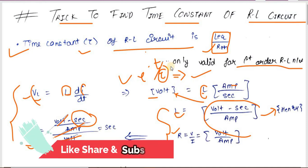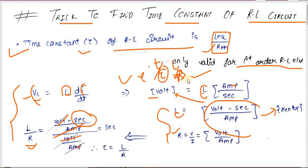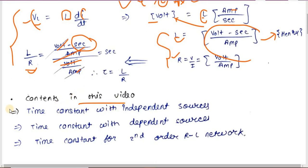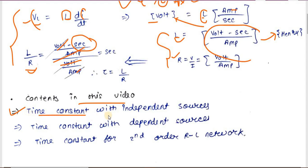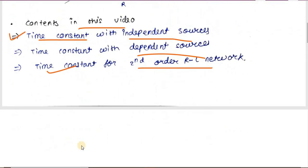The contents we are going to discuss in this video: first, finding the time constant with an independent source; then moving to a dependent source; and finally, how to calculate the time constant for a second-order RL network.